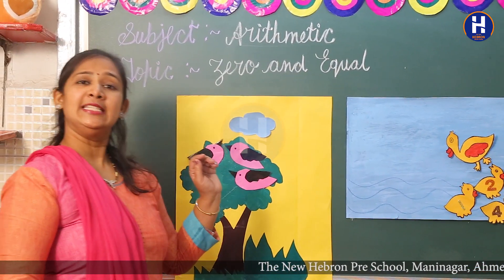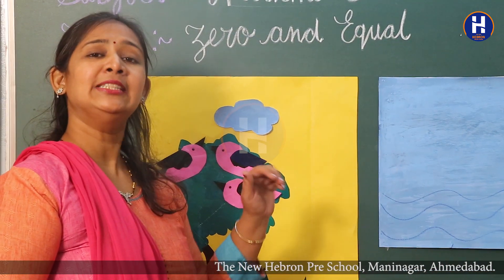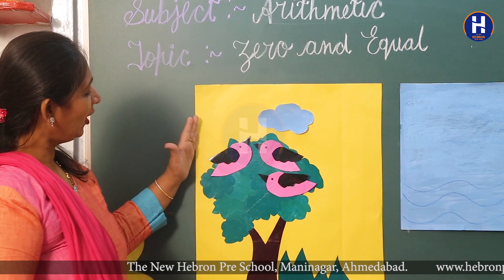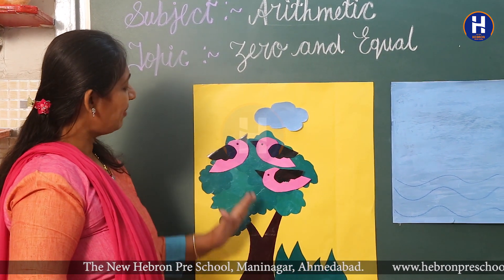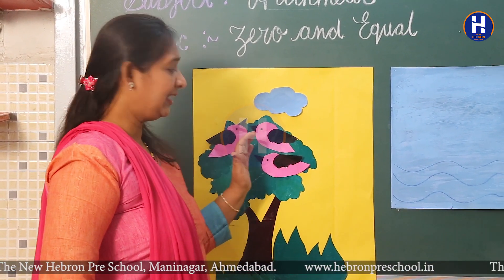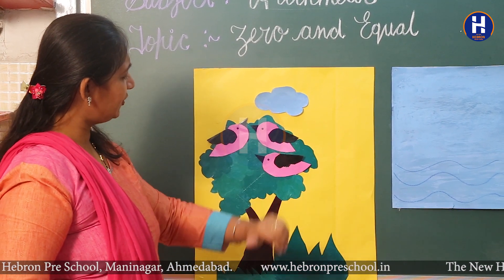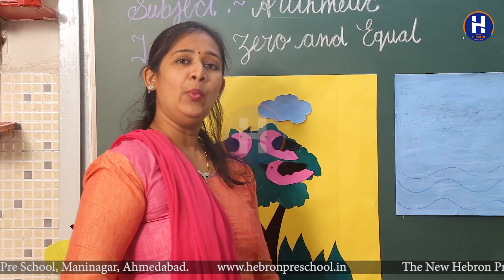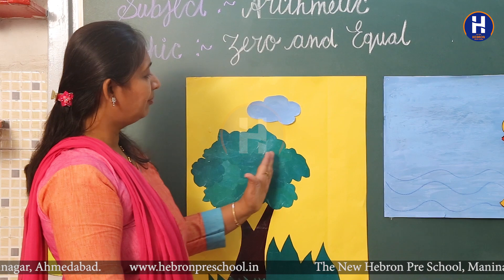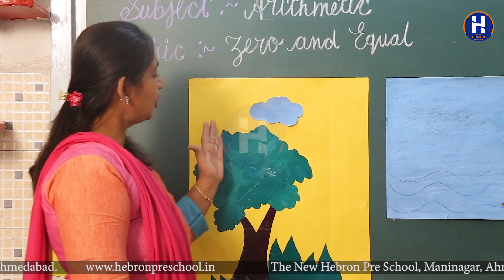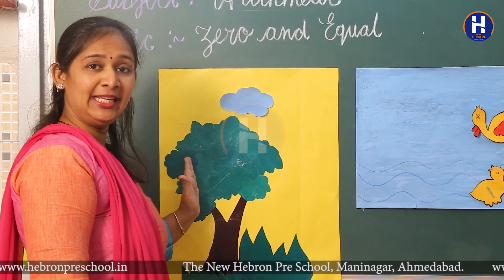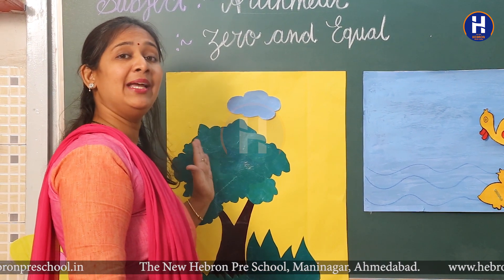Let's understand the meaning first. Zero means nothing. See here I'm having a picture. In this picture I'm having a tree and three birds are sitting on this tree and now they are hungry. They didn't see any of the fruits on this tree. So now they went to hunt for their food. You can see that the birds flew away. So not a single bird is on this tree — that means no bird. No bird means zero bird.